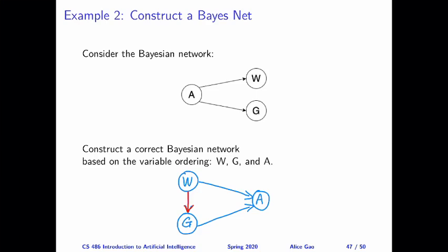This is an example on slide 47 in lecture 11. In this example, we have a network where W and G are noisy sensors of A, and we're changing the order to construct another correct Bayesian network. The correct order we're going to use is W first, then G, then A.